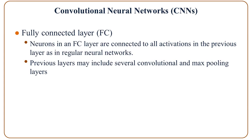The last layer in the architecture is a fully connected layer, or FC. Neurons in an FC layer are connected fully to all activations in the previous layers, just like in a regular neural network, and previous layers may include several convolutional and max pooling layers.